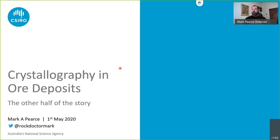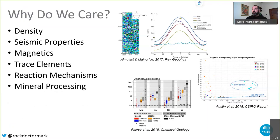In thinking about what to talk about, I thought we often talk a lot about applying geochemistry or geophysics to study ore deposits. The link between chemistry and geophysics is actually the minerals themselves in the ore deposits, and the crystallography of these minerals plays a controlling role in many of the processes and in the things we use as vectors to ore deposits, as well as in processing.